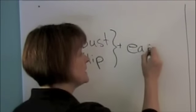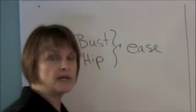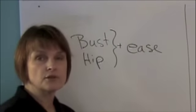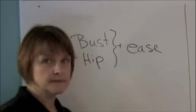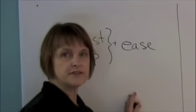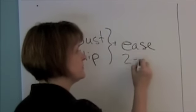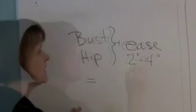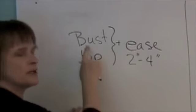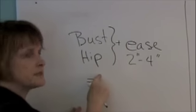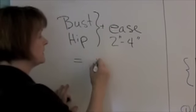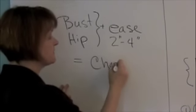Now ease is just extra width in the body of our sweater that we add for drape and appearance and ease of movement. On a standard sweater, ease is two to four inches. You will combine the larger of the bust or hip measurement and the ease and you will get what we will call the chest measurement.